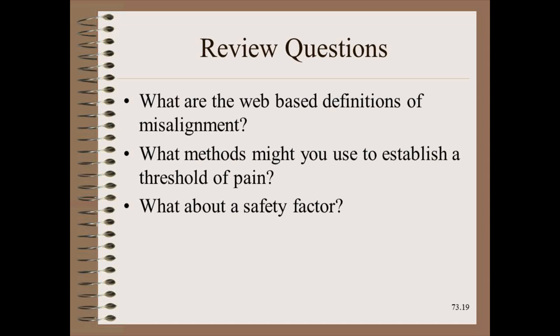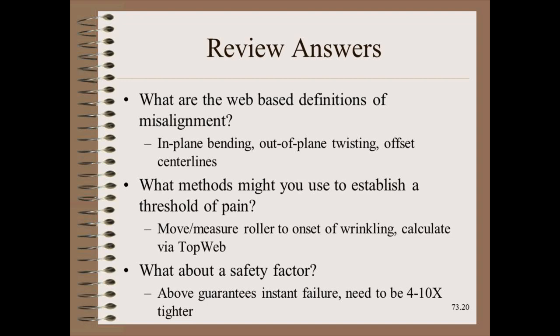Review questions: 1. What are the web-based definitions of misalignment? 2. What methods might you use to establish a threshold of pain? 3. What about a safety factor? Answers: 1. The web-based definitions of misalignment are in-plane bending, out-of-plane twisting, and offset center lines. 2. One way is to move and measure the amount of misalignment at the onset of wrinkling. Alternatively, you could calculate it via Top Web or Wrinkle Predictor. 3. The above methods would guarantee instant failure. A safety factor of 4 to 10 might be appropriate for the converting and paper industries respectively.